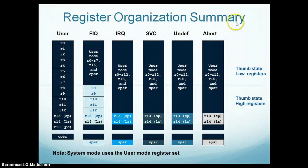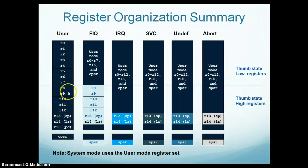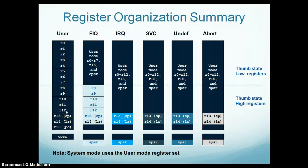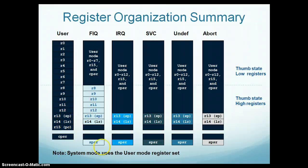This is the register organization of different processor modes. In User Mode, there are a total of 16 registers R0 to R15 and a Current Program Status Register CPSR. The first 13 registers, R0 to R12, are called General Purpose Registers. The remaining registers R13, R14, and R15 have special functions: R13 is called the Stack Pointer, which saves the top of the stack; R14 is the Link Register, in which the processor saves the return address when it calls a subroutine; and R15 is the Program Counter, where the address of the next instruction to be executed is saved.